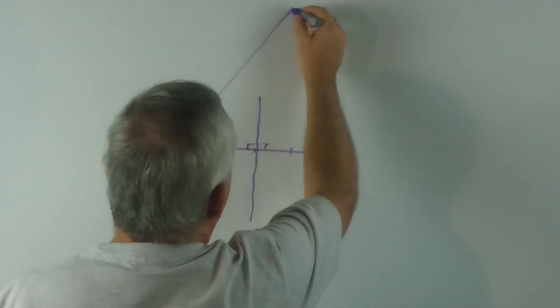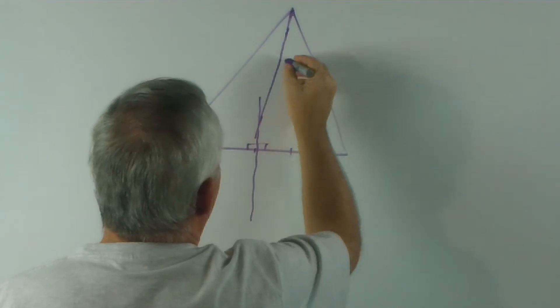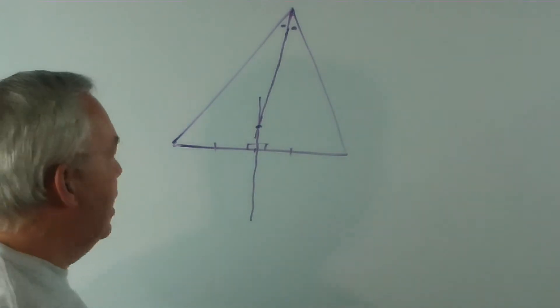We then bisect the angle at the top, sort of as best I can, and we find the point where those two lines intersect.